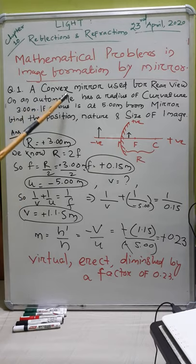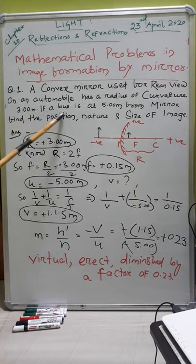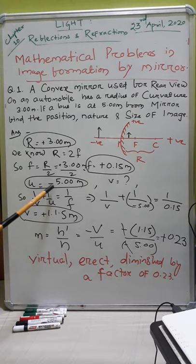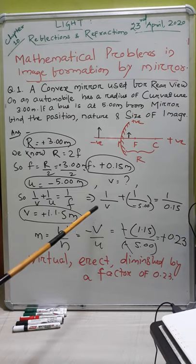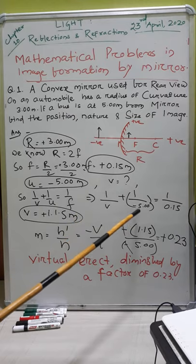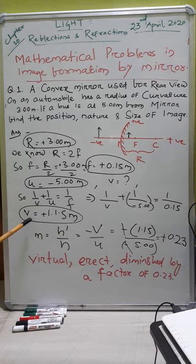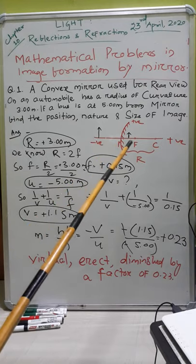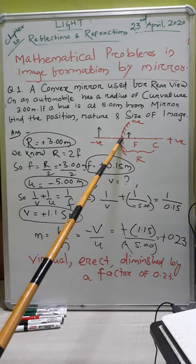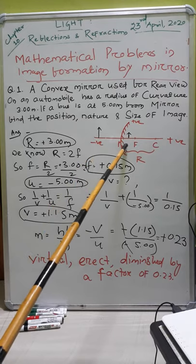Next, object distance. This is 5 meter away from the mirror. So object distance U is minus 5.00 meter. Next, I use the formula for image distance V. So 1 by V plus 1 by U equal to 1 by F. So 1 by V is equal to 1 by F minus 1 by U, and we calculate the value.